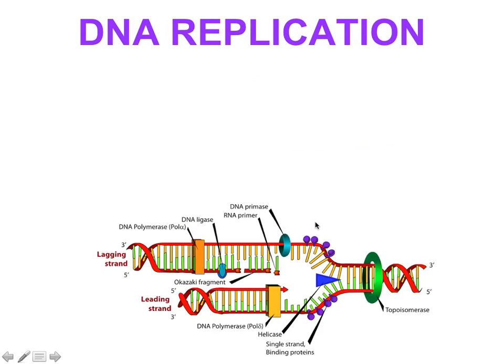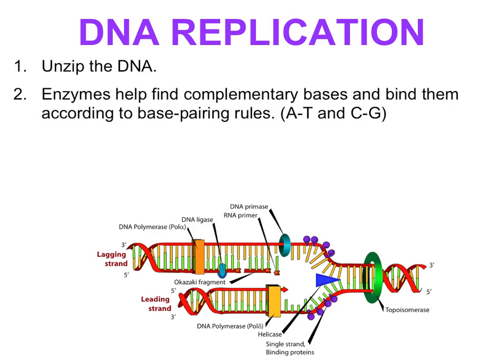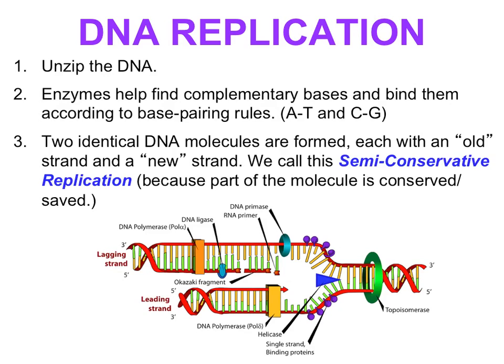It's a pretty complicated process, but we're going to simplify it. First, the DNA gets unzipped. Next, enzymes help find complementary base pairs and bind them according to base pairing rules — A's go with T's, and C's go with G's. At the end, two identical DNA molecules are formed, each with one old strand and one new strand. The old strand is the template, and the new base pairs are brought in. That's why we say DNA replication is semi-conservative — part of the original molecule is conserved or saved in the end result.